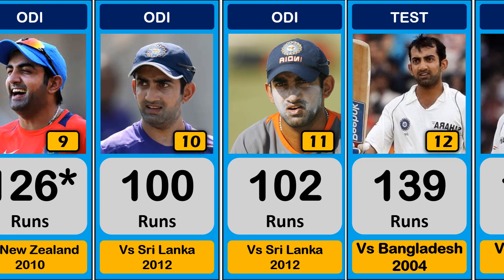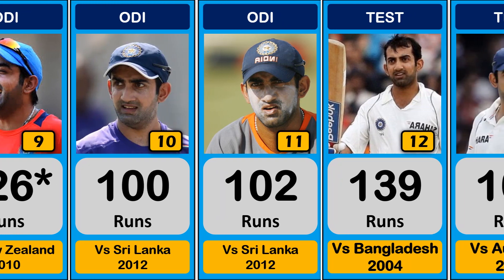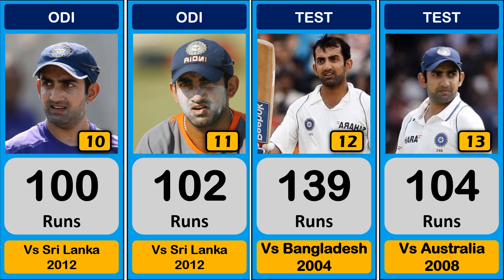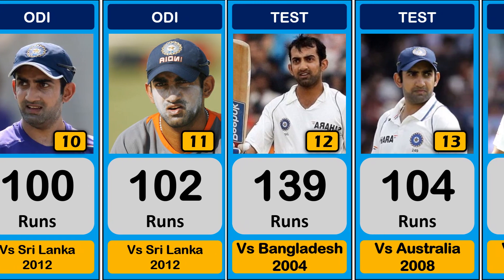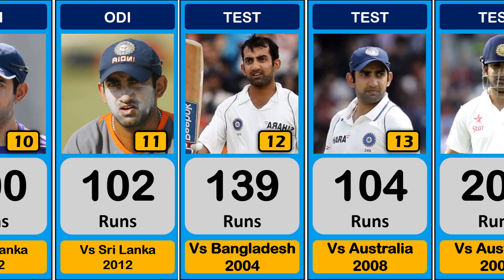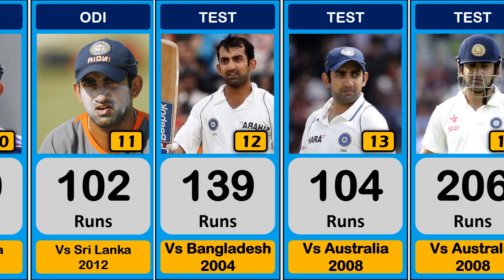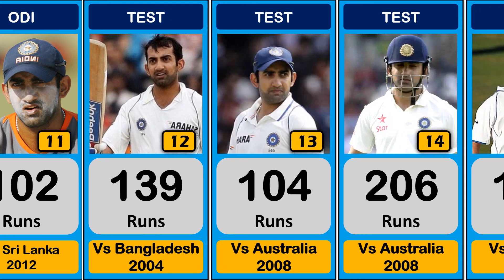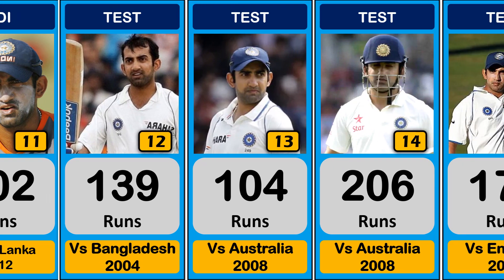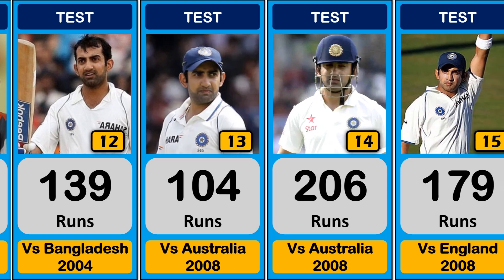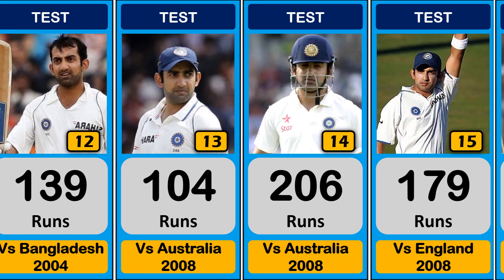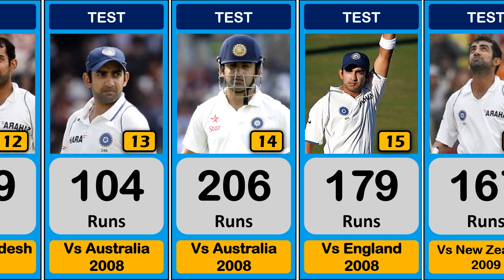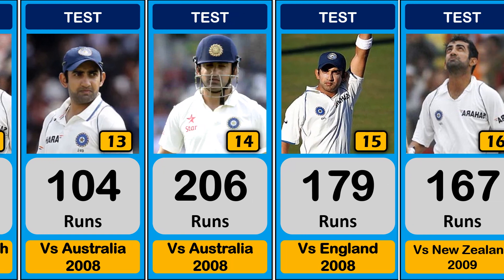139 runs against Bangladesh, 104 runs against Australia, 206 runs against Australia, 179 runs against England.